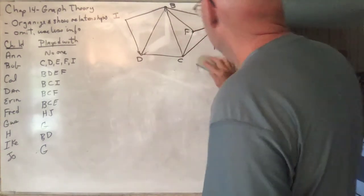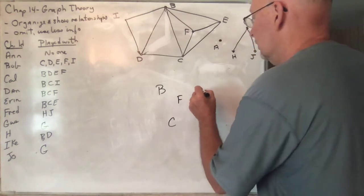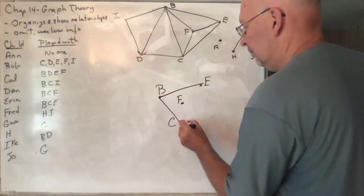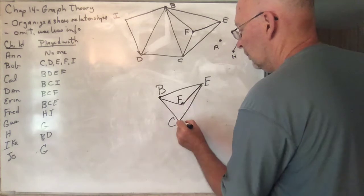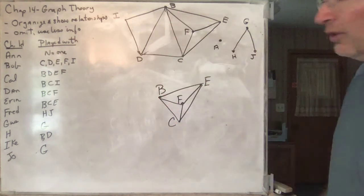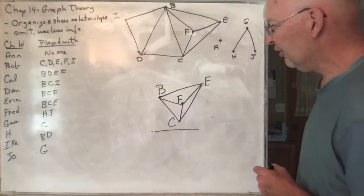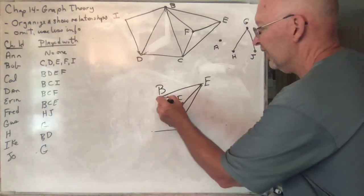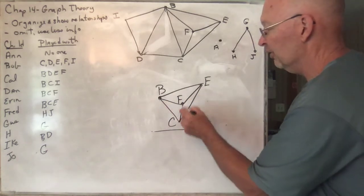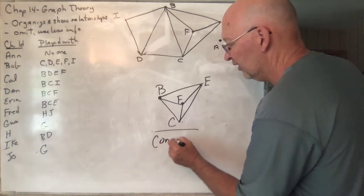If you take just a portion of this graph — say B, C, F, and E — and connect them, that's called a subgraph. This particular subgraph has the property that every single vertex is connected directly to every other vertex. B goes to all three of the others, and so does C, F, and E. Whenever you have a graph where every single vertex is connected to every other, it's said to be complete.